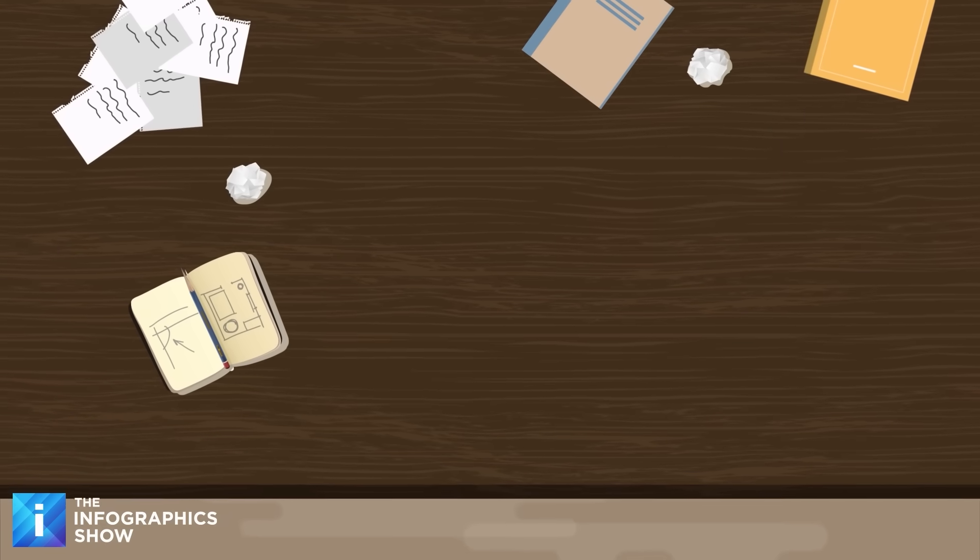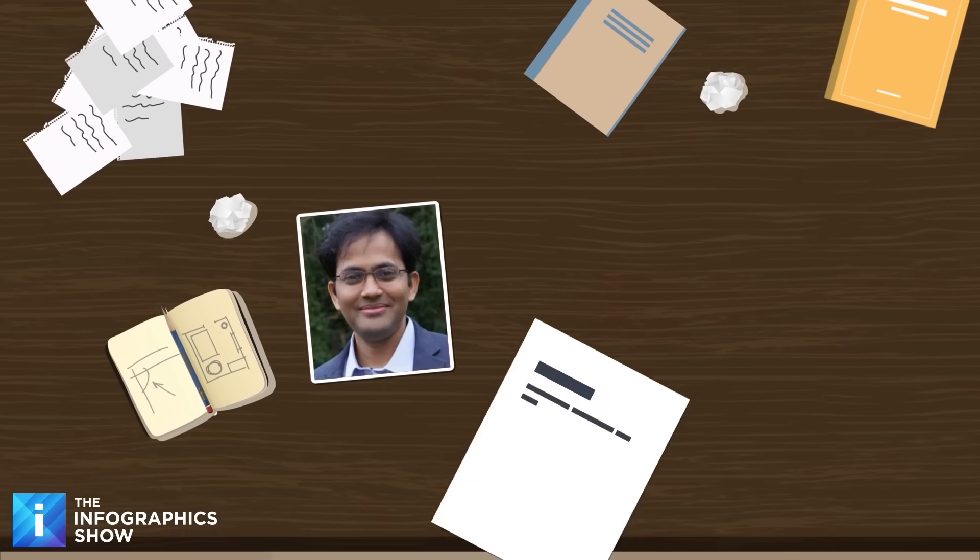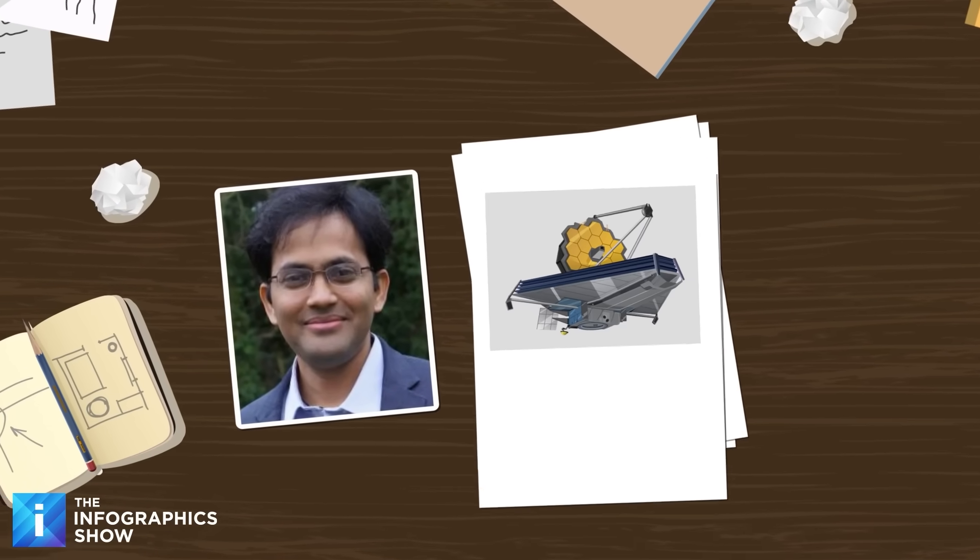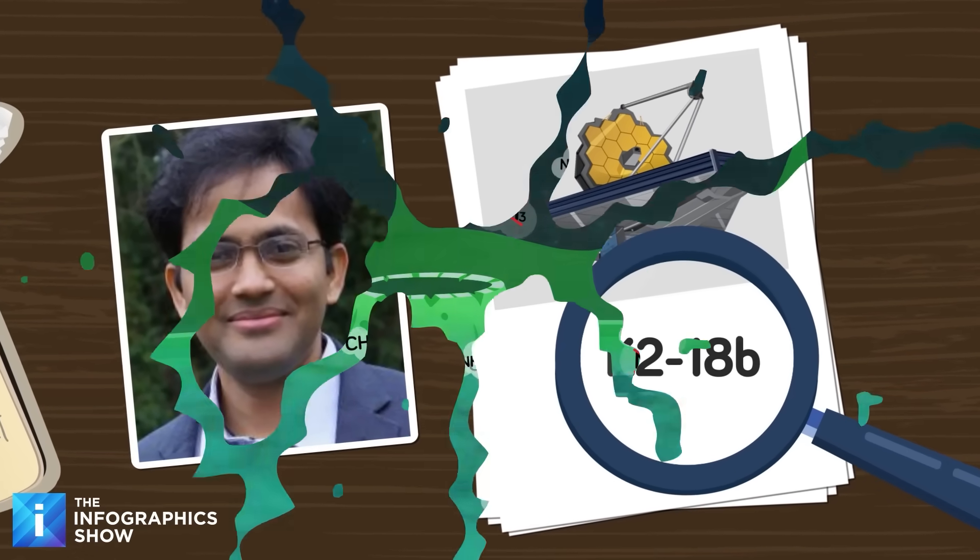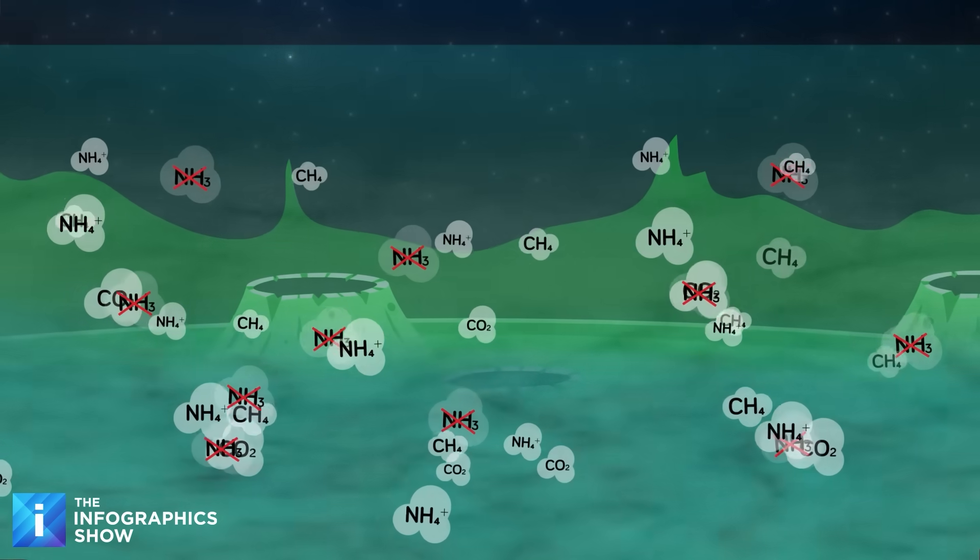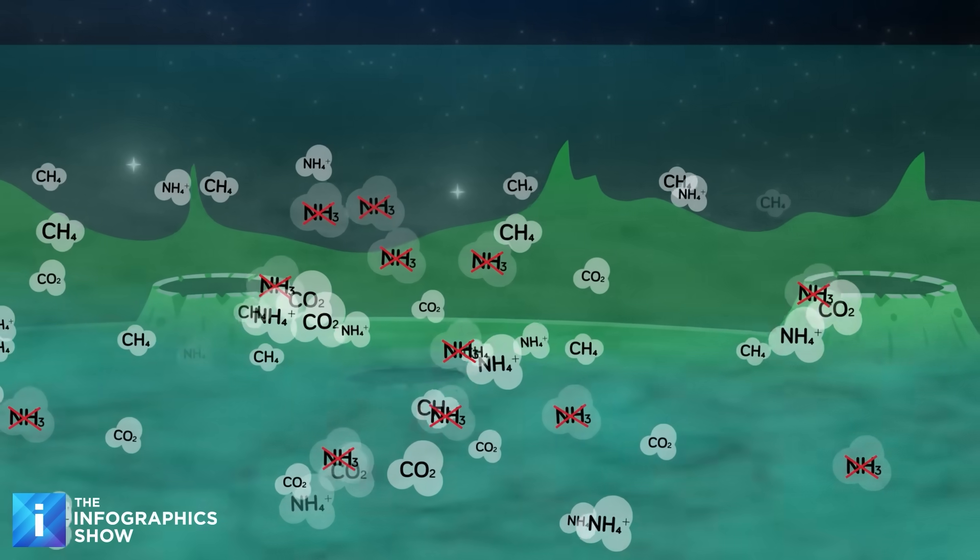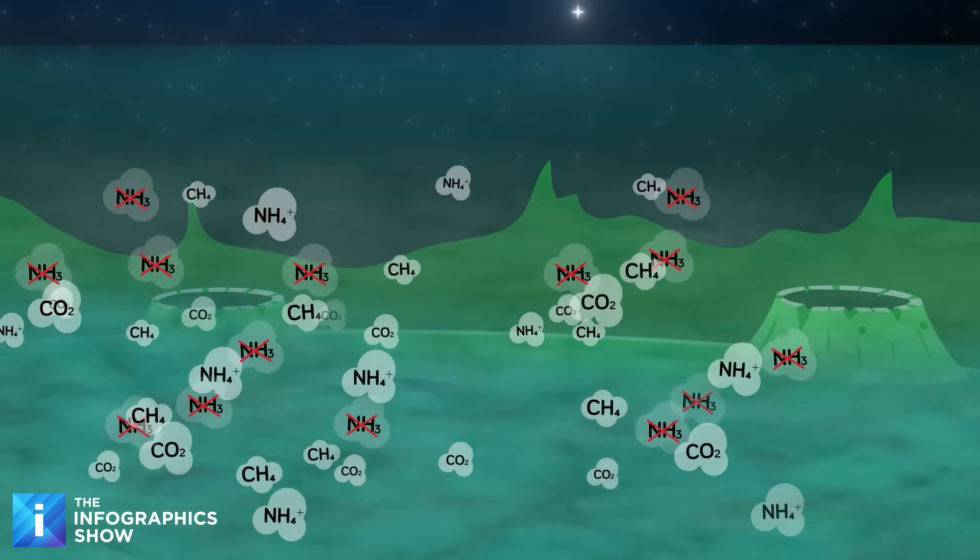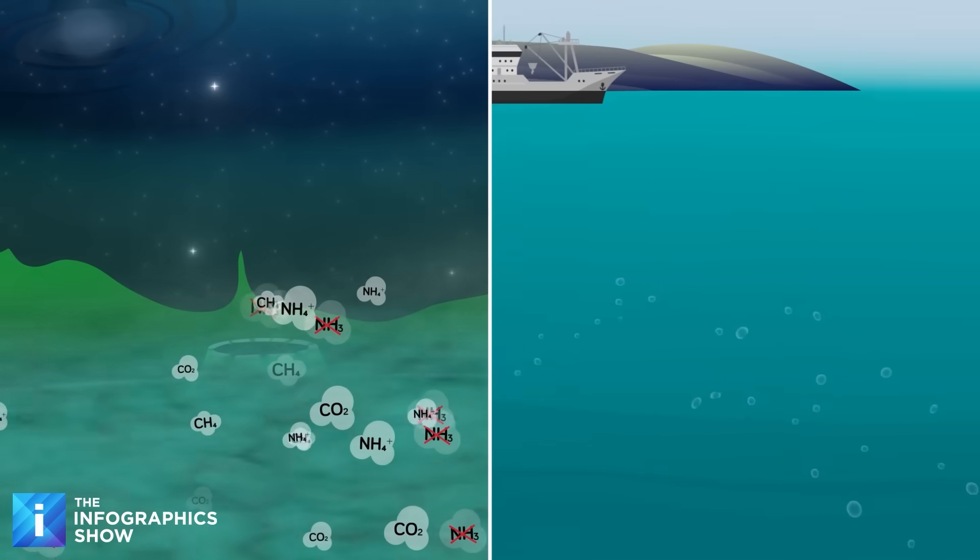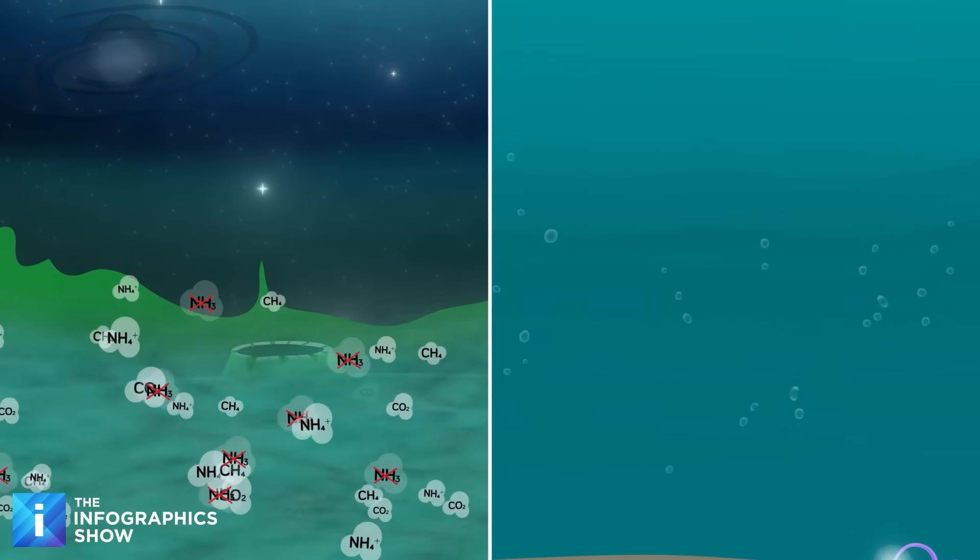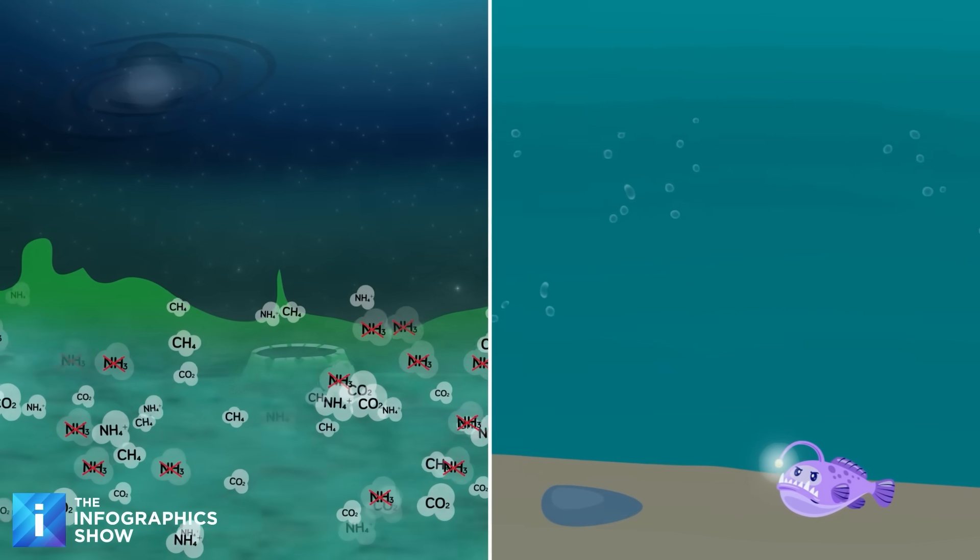All of this is why the James Webb Space Telescope Project, led by Professor Niku Marusudan from the University of Cambridge, were interested in K2-18b. Initial observations indicate that the hydrogen-rich planets might have water vapor in the atmosphere, as well as methane and carbon dioxide, but without the presence of ammonia. This could be suggestive of large oceans deeper than those on Earth, underneath a hydrogen atmosphere.